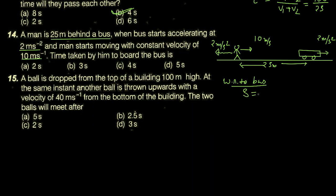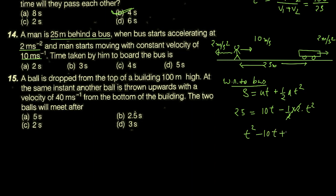Equation لگاتے ہیں: s = ut + ½at²۔ Distance = 25 m، relative velocity u = 10 m/s، relative acceleration = −2 m/s² (opposite direction)۔ تو: 25 = 10t − ½(2)t² = 10t − t²۔ Rearranging: t² − 10t + 25 = 0، جو کہ (t − 5)² = 0 ہے۔ تو time جو لگے گا وہ exactly 5 seconds ہے — اس point پر وہ بس کو پکڑ لے گا۔